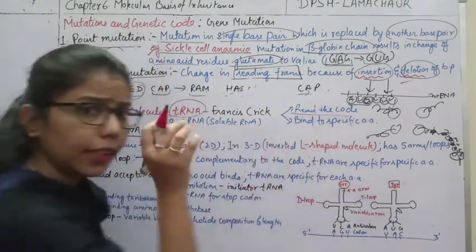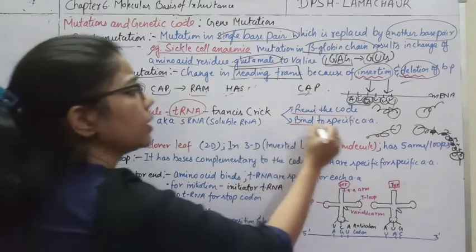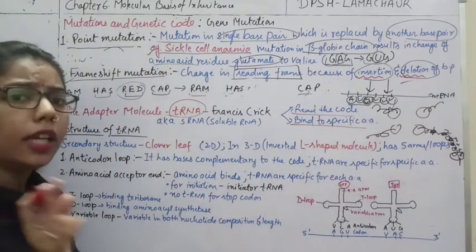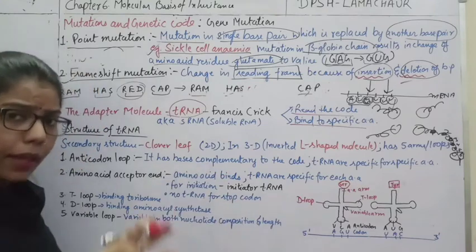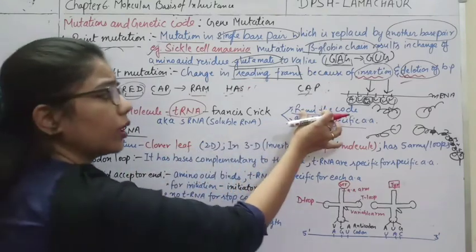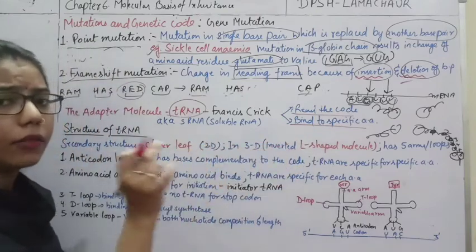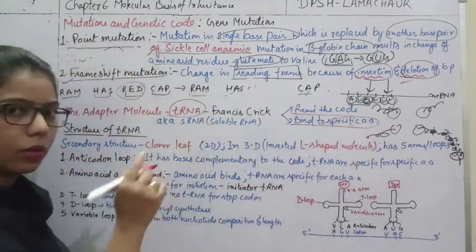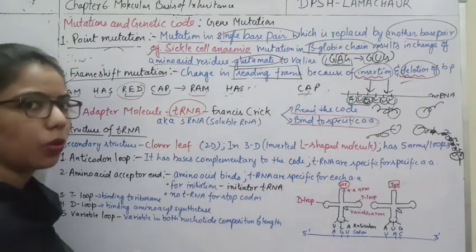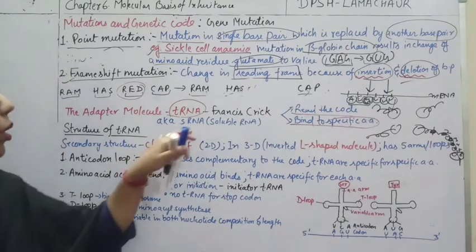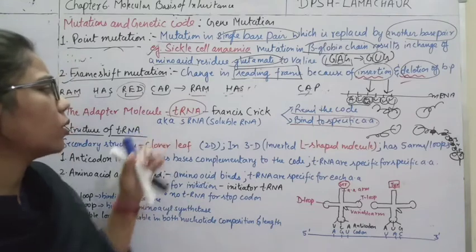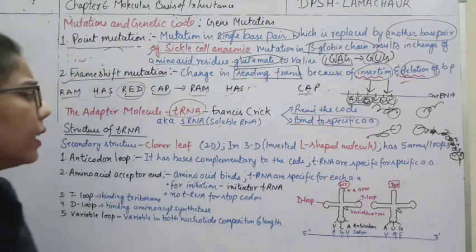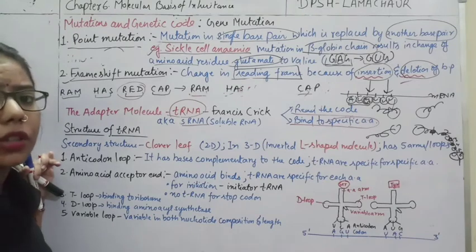The tRNA reads the code and binds the specific amino acid. It is specific — if the code is for methionine, it will bind methionine. tRNA is also known as sRNA, that is, soluble RNA. Now, if we talk about the structure of tRNA, it is like a clover leaf — this is the 2D model.